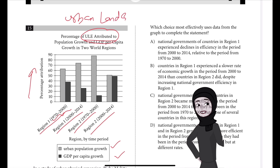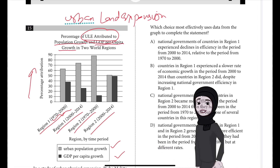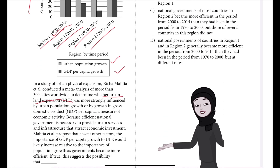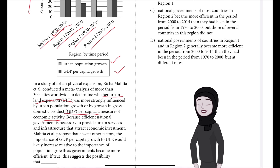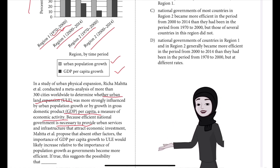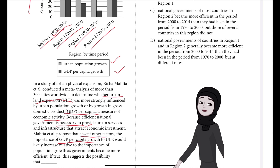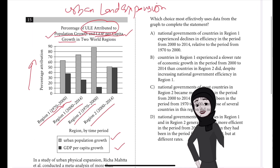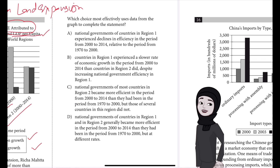The ULE mentioned here is urban land expansion. ULE is attributed to either population growth or GDP per capita growth. Basically, if the city is expanding and becoming bigger, it is either due to population growth or due to GDP — the measure of economic activity. Meta et al. is proposing, keeping other factors absent, that the importance of GDP per capita growth to ULE would likely increase relative to the importance of population growth as governments become more efficient.